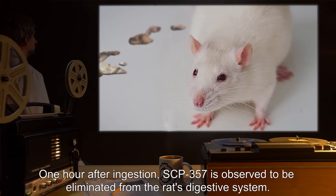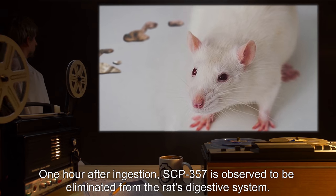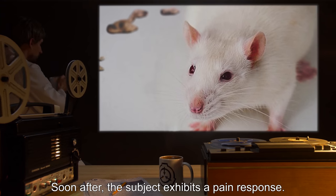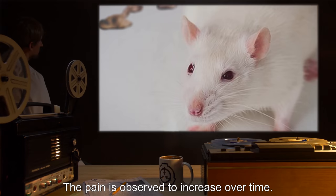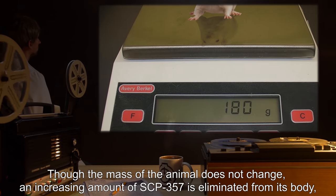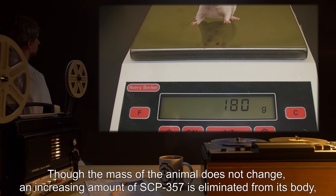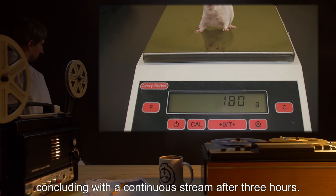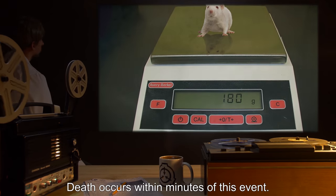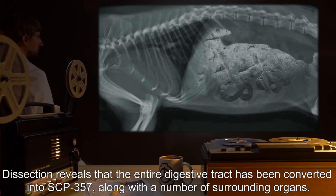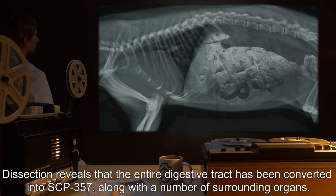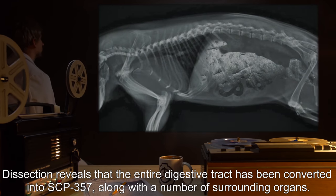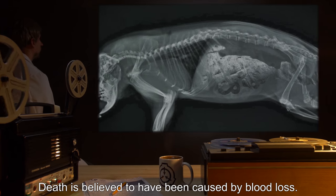Details: One hour after ingestion, SCP-357 is observed to be eliminated from the rat's digestive system. Soon after, the subject exhibits a pain response. The pain is observed to increase over time. Though the mass of the animal does not change, an increasing amount of SCP-357 is eliminated from its body, concluding with a continuous stream after three hours. Death occurs within minutes of this event. Dissection reveals that the entire digestive tract has been converted into SCP-357, along with a number of surrounding organs. Death is believed to have been caused by blood loss.